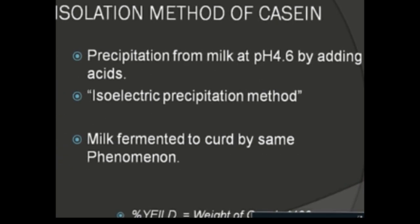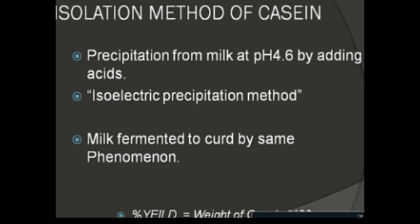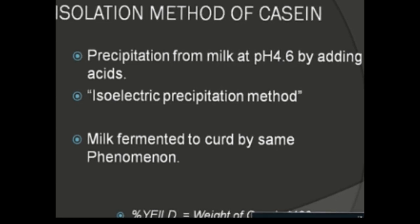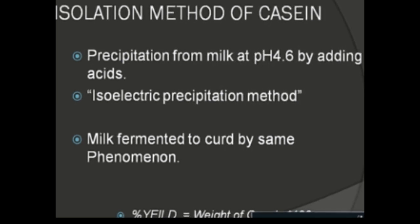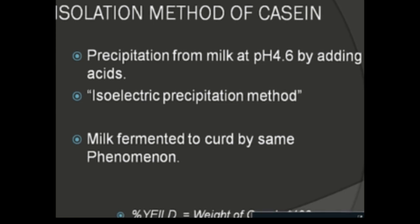How is casein isolated? The principle of isolation is the precipitation of casein from milk at pH 4.6 by adding acid, and this method is called isoelectric precipitation. The isoelectric point is the point at which the protein is least soluble, and for casein the isoelectric point is approximately 4.6, which can be attained by the addition of either salts or acids.